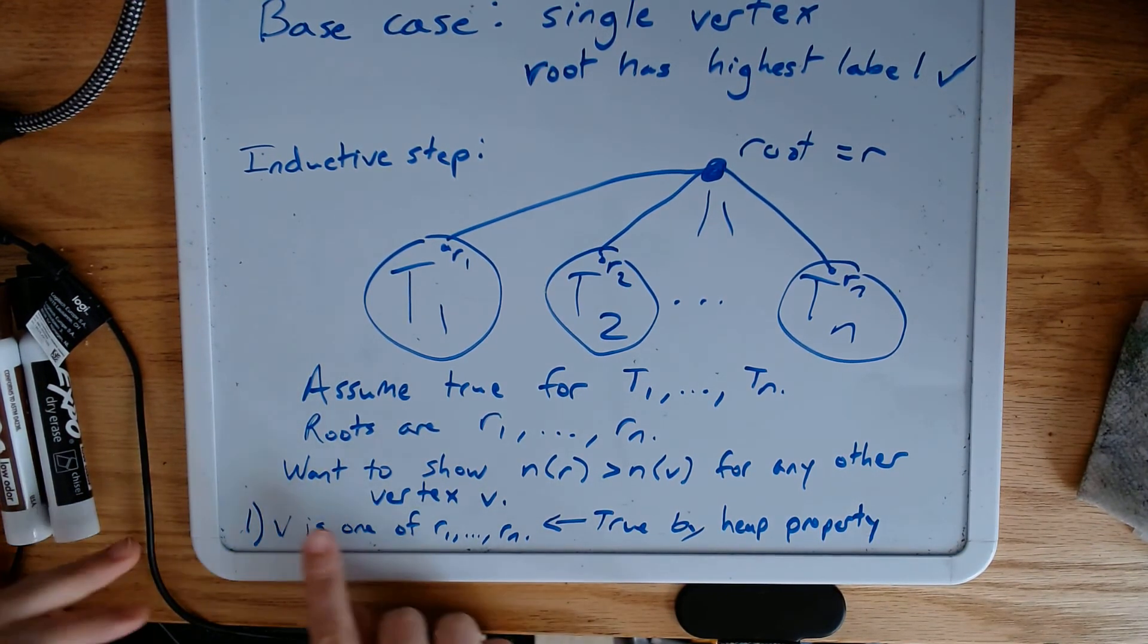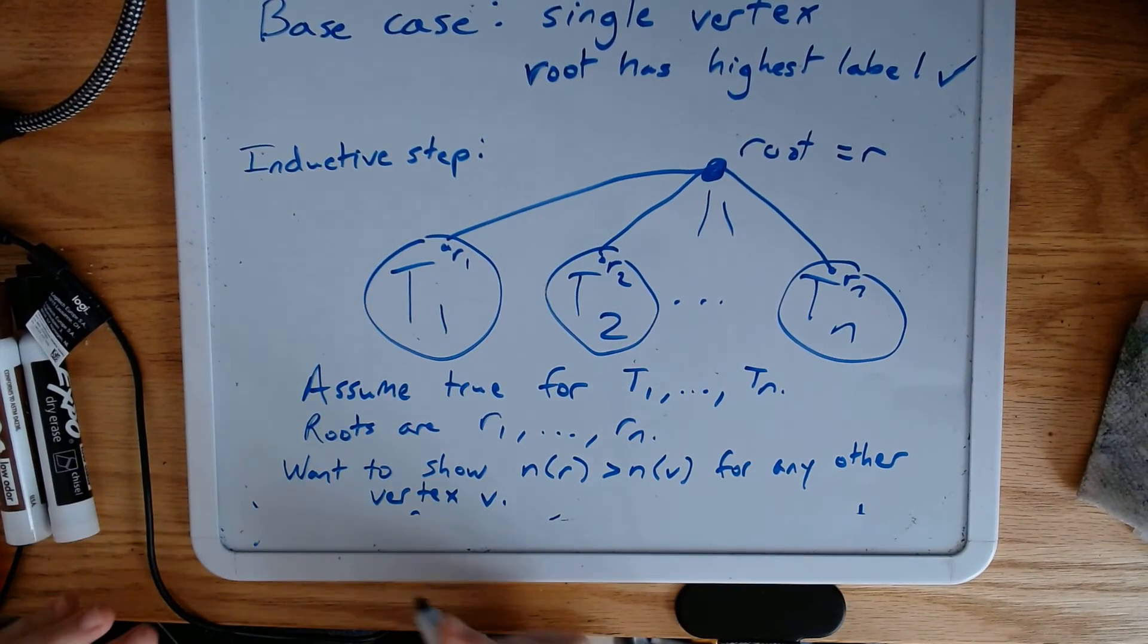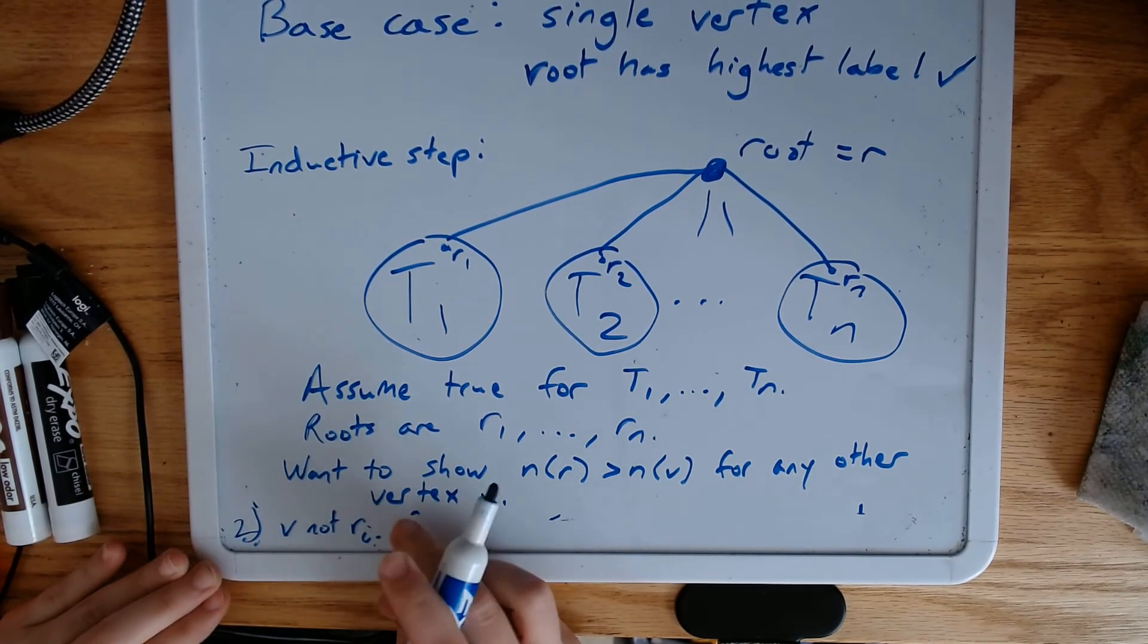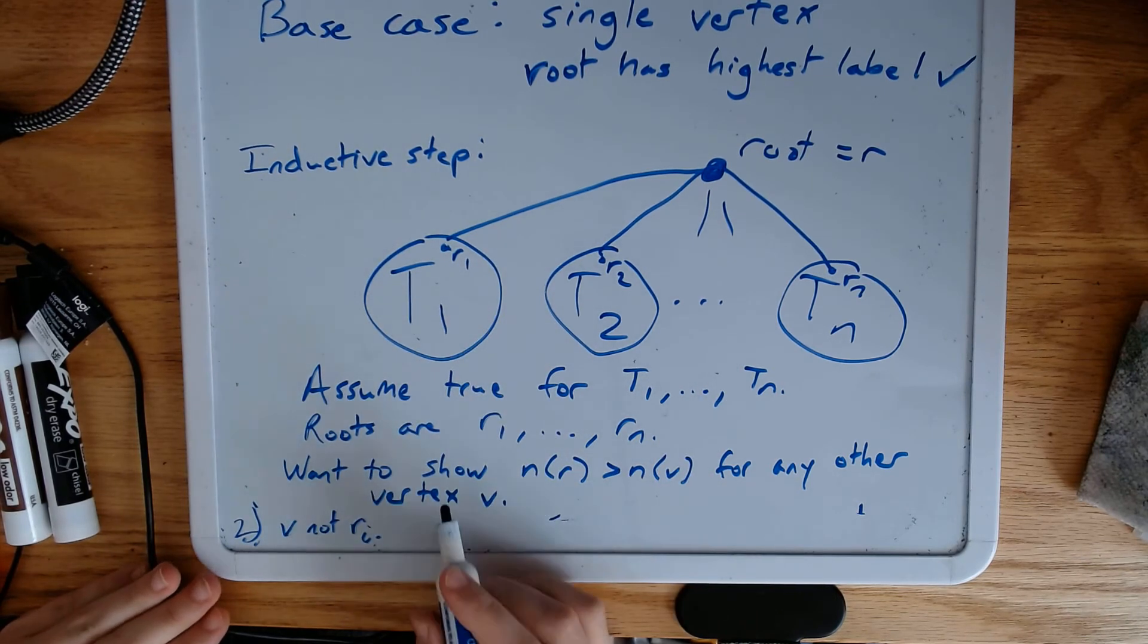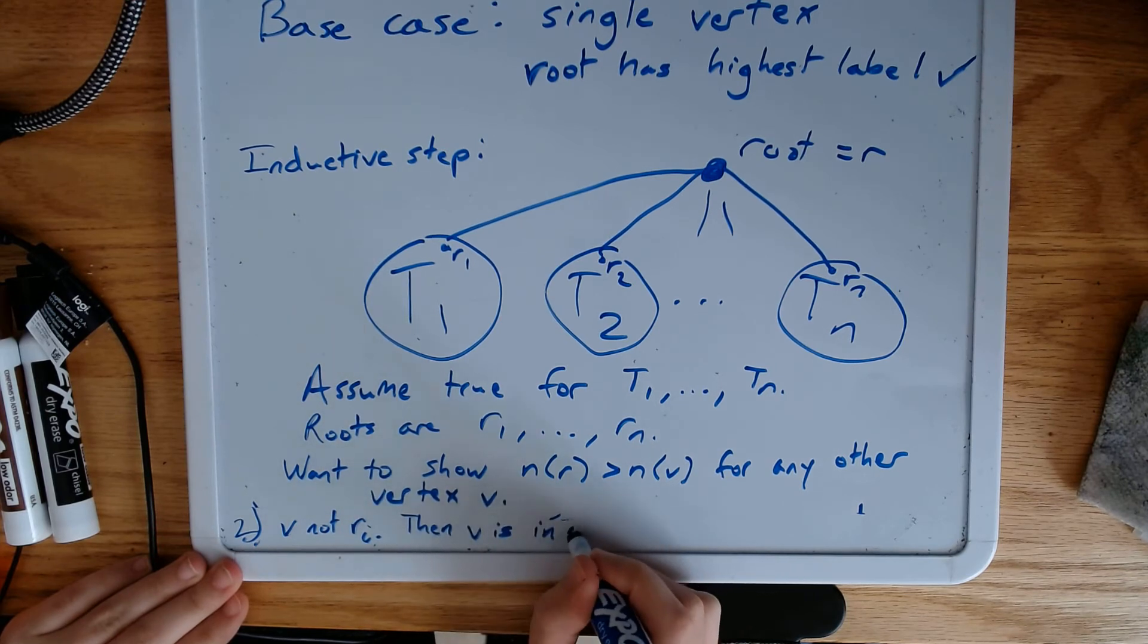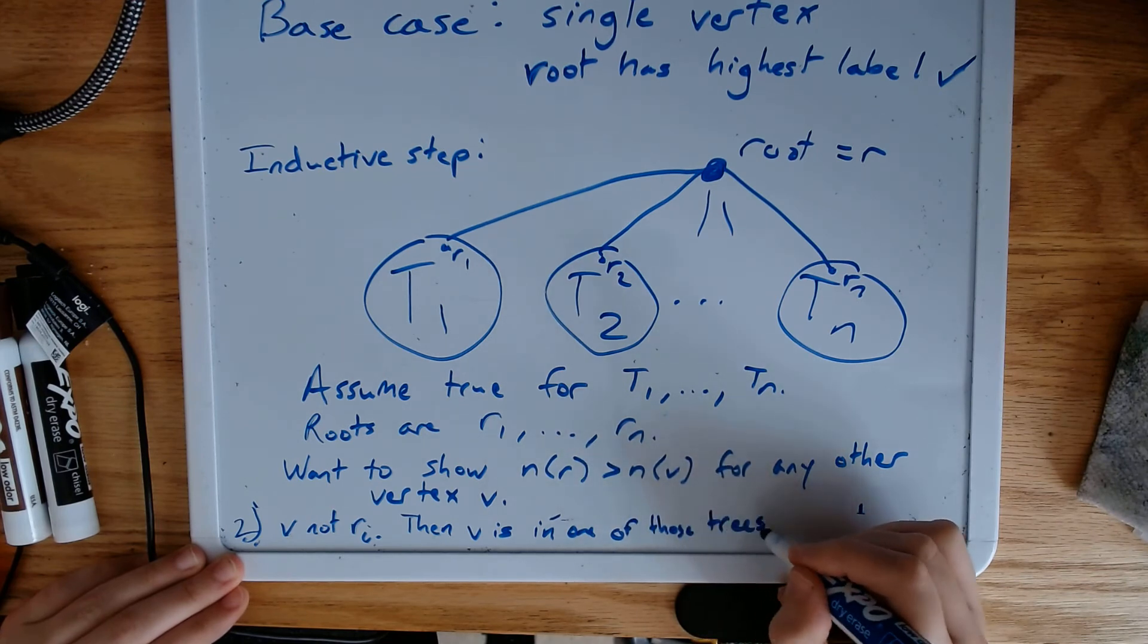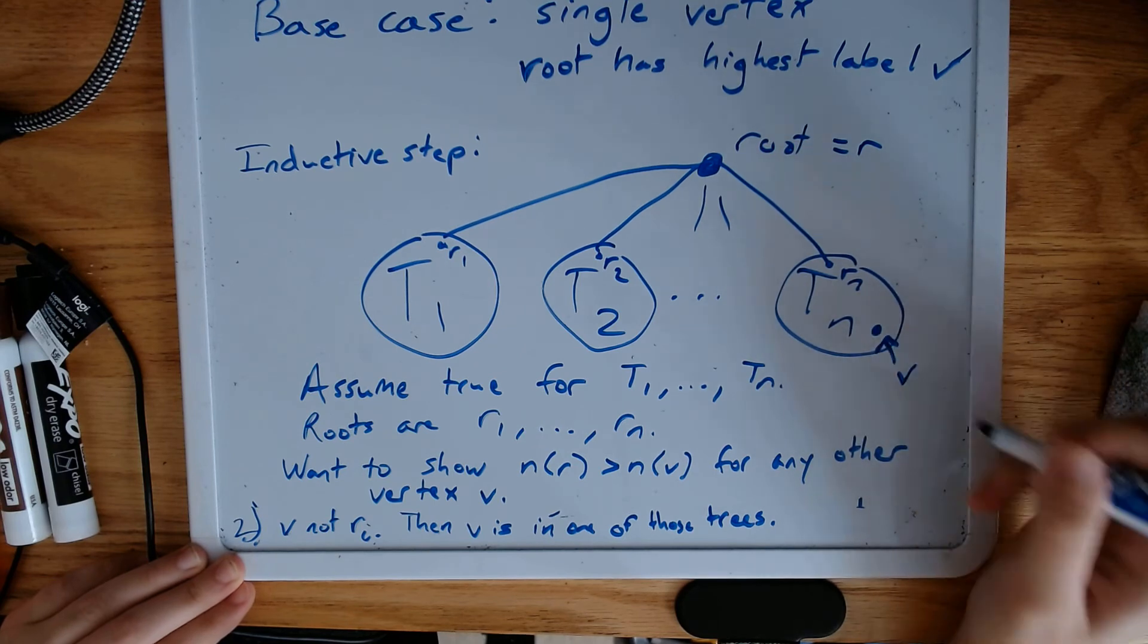What if it's not this case, though? What if v isn't ri, isn't some root of t1 through tn? Then v is in one of those trees. Right? It's somewhere down here. So let's say this is v in tn.